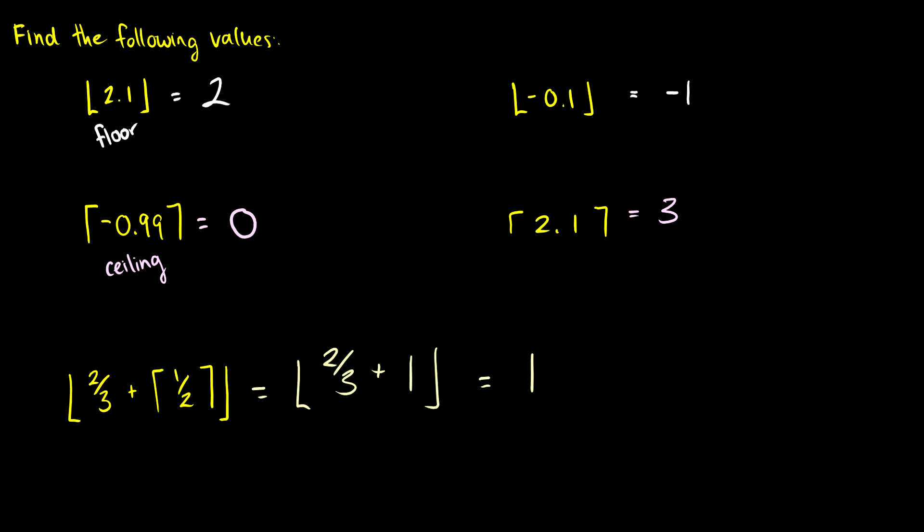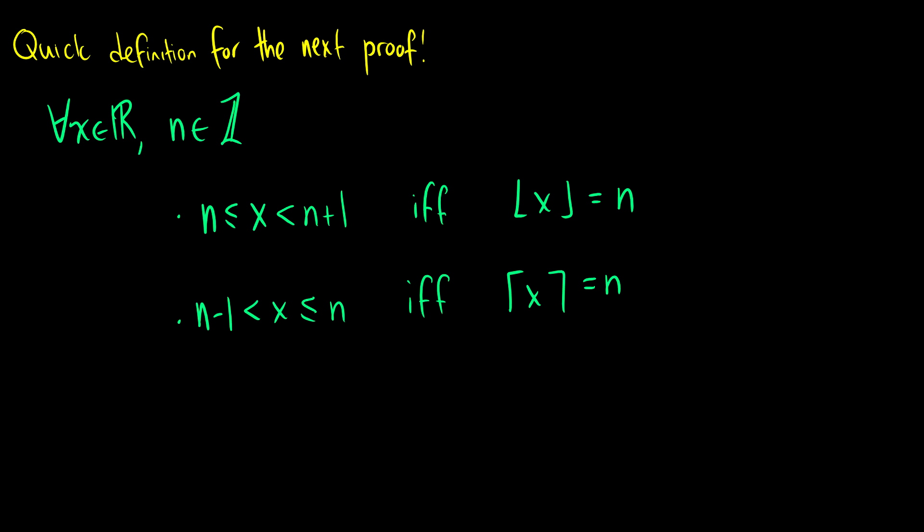So that's some computation questions. Let's give you a formal definition of floor and ceiling. So if the floor of x is equal to an integer n, so this x is going to be a real number, n is going to be an integer, then we say that x is greater or equal to n but strictly less than n plus 1. Because if x was equal to n plus 1, then the floor would equal n plus 1.